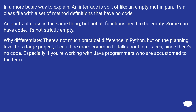In a more basic way to explain: an interface is sort of like an empty muffin pan — it's a class file with a set of method definitions that have no code. An abstract class is the same thing, but not all functions need to be empty; some can have code. It's not strictly empty. There's not much practical difference in Python, but on the planning level for a large project it could be more common to talk about interfaces, especially if you're working with Java programmers who are accustomed to the term.